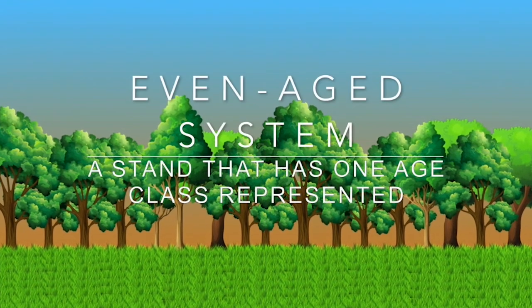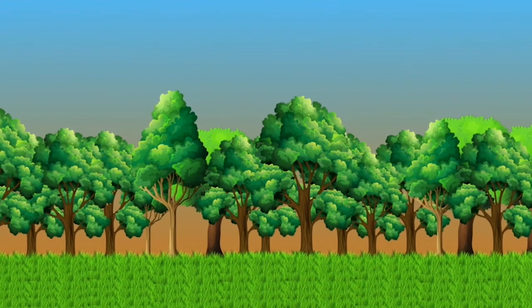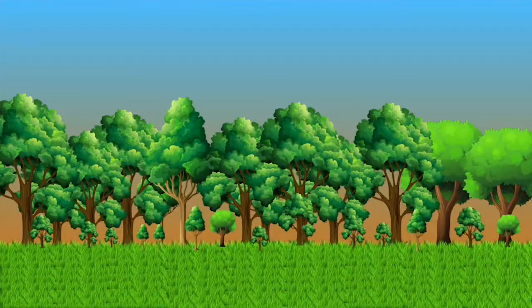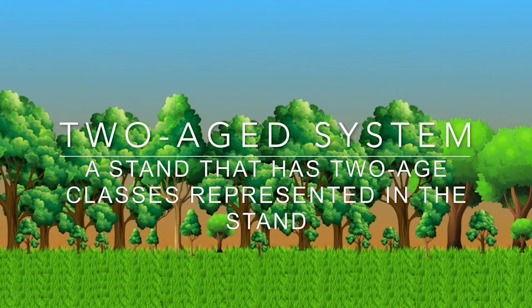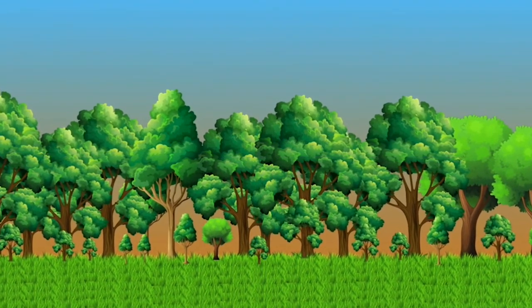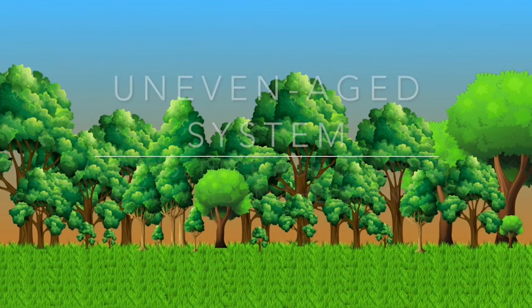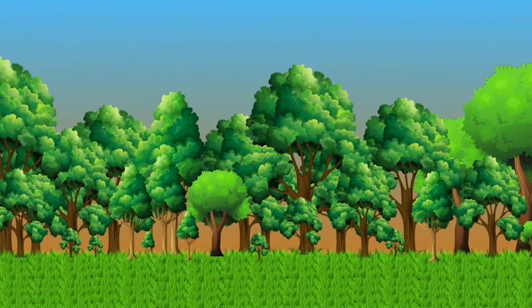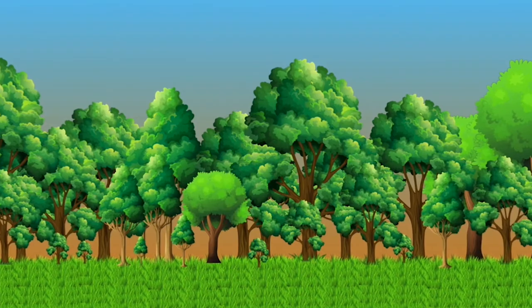The first system is an even-aged silvicultural system, which creates and maintains a single layer, a single cohort of trees, generally lacking a lot of structural heterogeneity and creating a more homogenous condition in the stand. We also have a two-age system — just how it sounds — there are two age classes in the forest. You might have an overstory and then a regenerating cohort coming up, with understory trees having some level of shade tolerance to grow up underneath the canopy. And lastly, we have an uneven-age system, characterized by a lot of structural heterogeneity, with multiple age classes from the canopy all the way down, having midstory and understory trees.